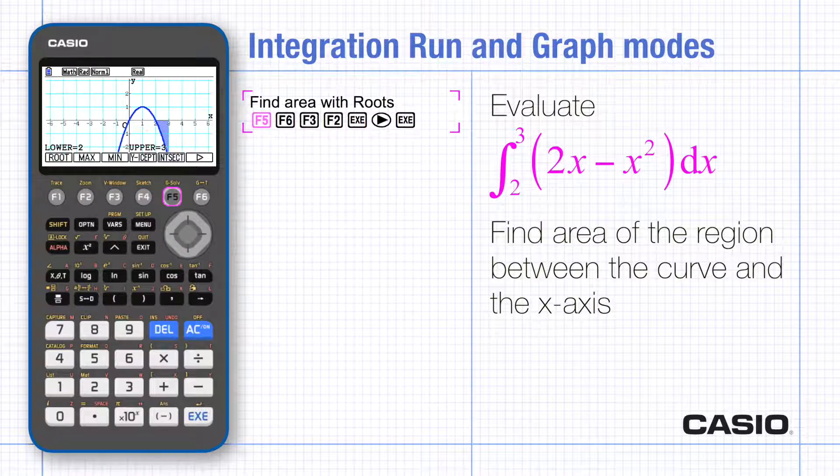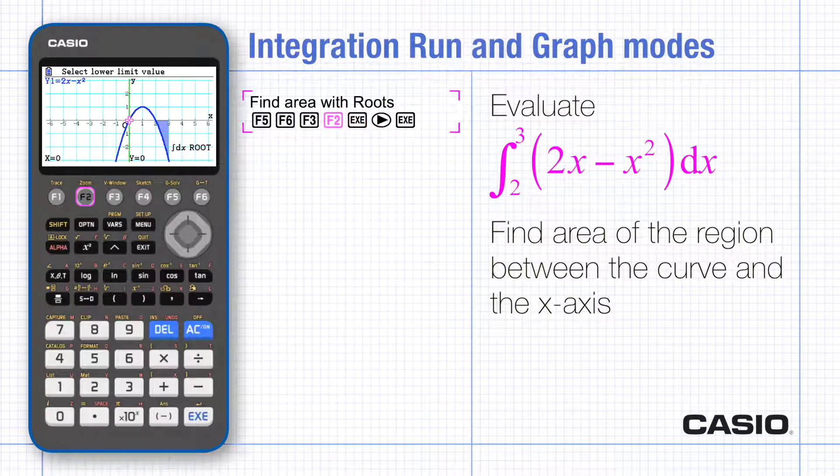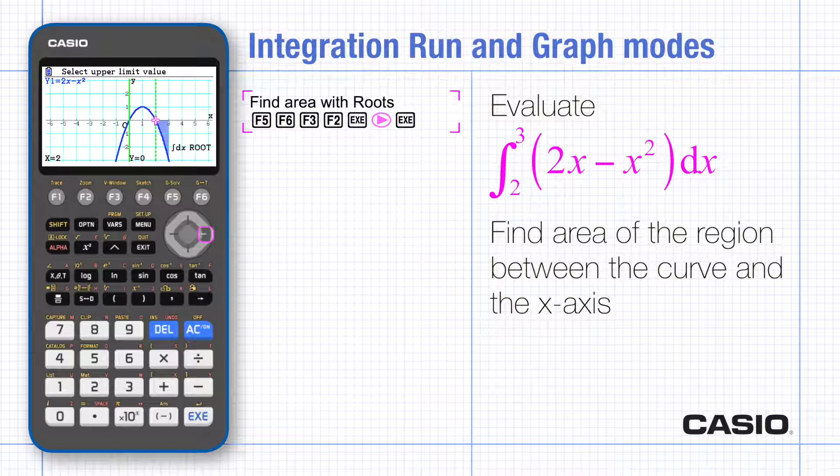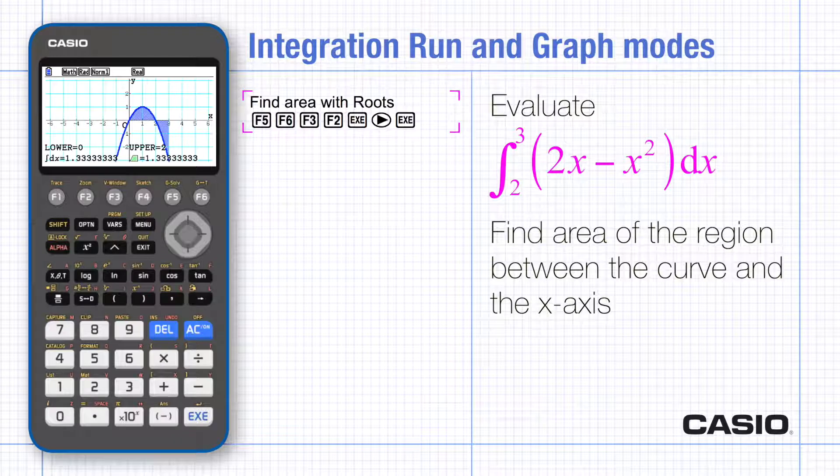The cursor appears where the curve crosses the axis. Execute and scroll to the next point and execute again. The display gives you both the limits used and the area of the region which is shaded for you. Notice the area from the previous integral is still shaded but it's not included in the answer given.